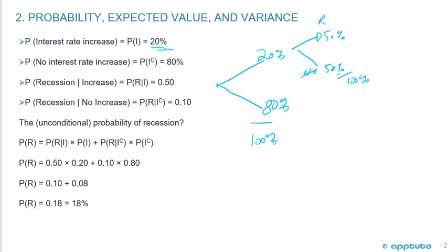So if there's no rate increase, there's a probability of a recession of 10%. So the probability of no recession then is going to be 90% because again, that's going to add up to 100%.